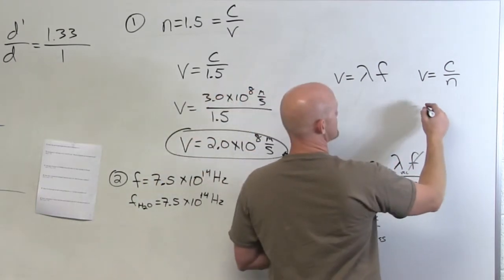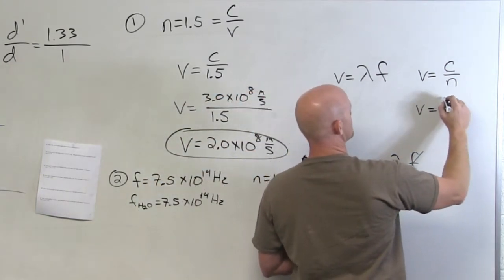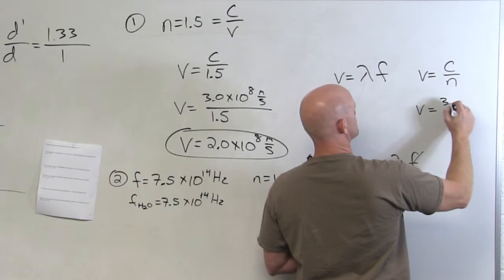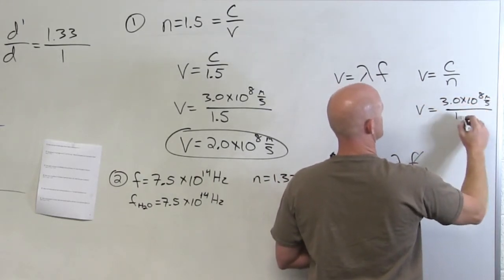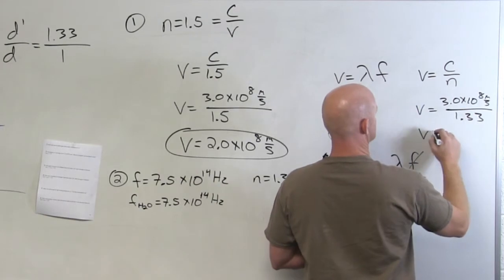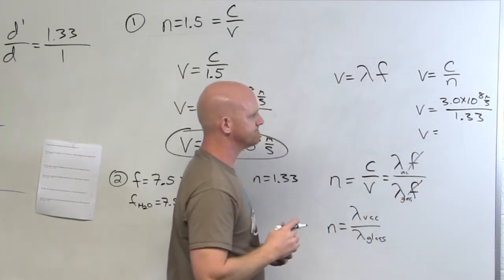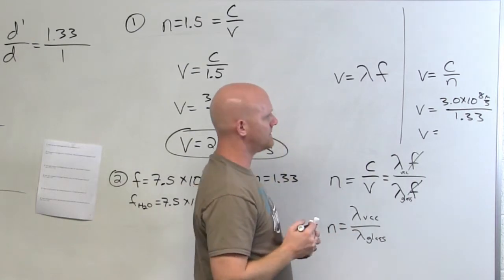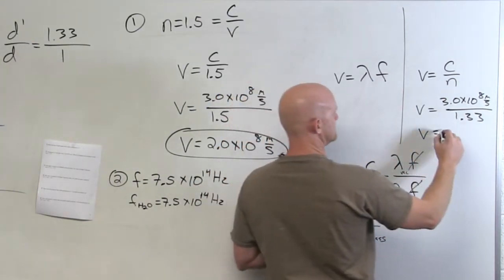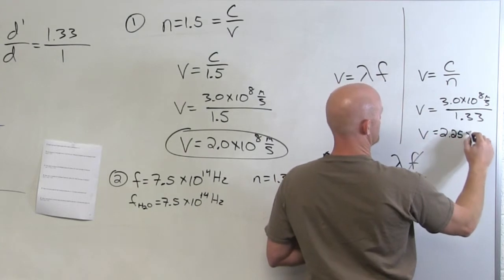So what is the velocity of light in water? 2.25 times 10 to the 8th. Good.